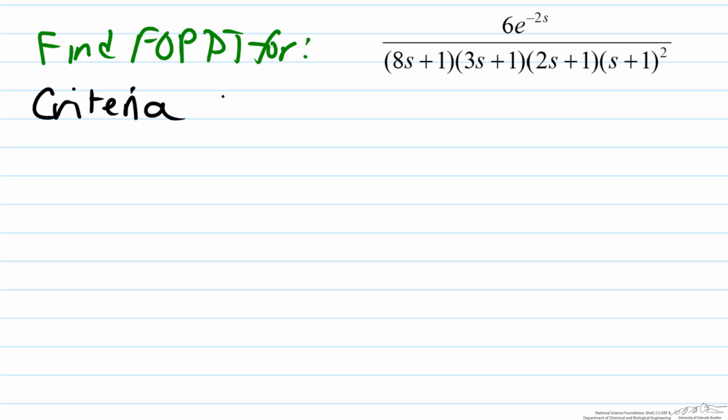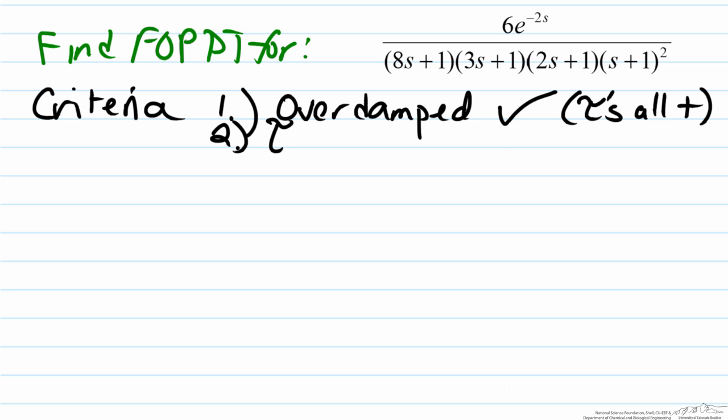The first is that the function is overdamped, that checks out because we have tau s that are all positive. Secondly, we want to make sure the fact that the tau of the largest time constant is greater than or equal to one and a half times the next largest. In this case our values here are eight over three, something which is greater than one and a half, so those check. Therefore, this Skogestad method can be used.